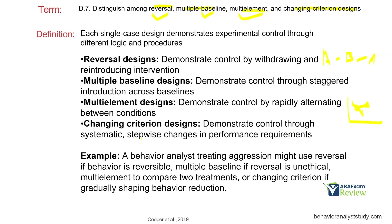Changing criterion designs demonstrate control through systematic stepwise changes in performance requirements. For example, a behavior analyst treating aggression might use reversal if behavior is reversible, multiple baseline if reversal is unethical, multi-element to compare two treatments, or changing criterion if gradually shaping behavior reduction. Just like with measurement, our design is dependent on what we're trying to achieve and what we're trying to show.